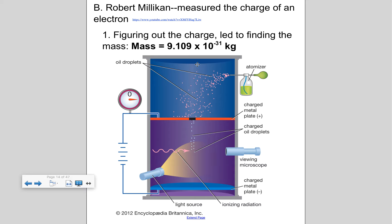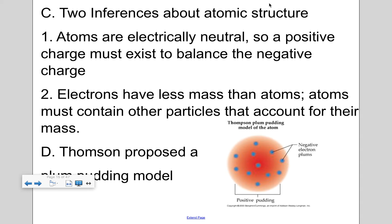Now, if electrons are really that small, well then what makes up the rest of the mass of this atom? So two inferences made by the atomic structure: First off, when you just look at an atom found in nature, a lot of times they're neutral. So here we have a negative charge, but there's gotta be a positive charge that balances it out. And then the second assumption is that these electrons have less mass than the atoms themselves. So atoms must contain some other particles that account for that mass that's not accounted for.